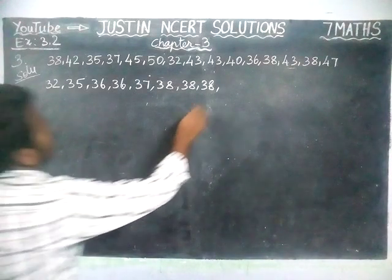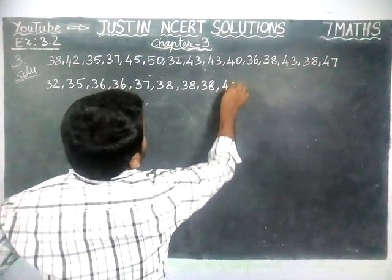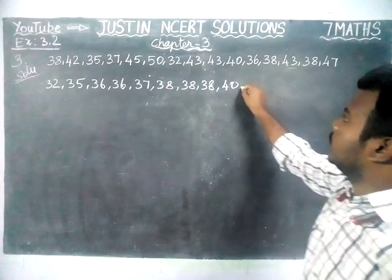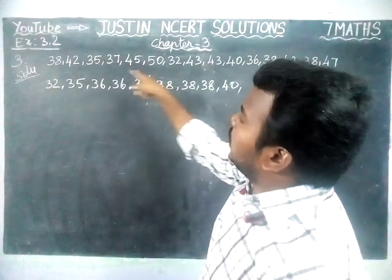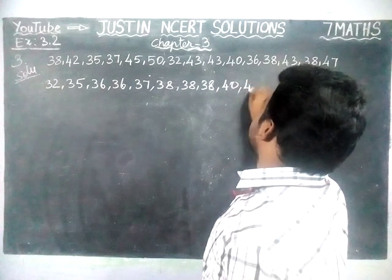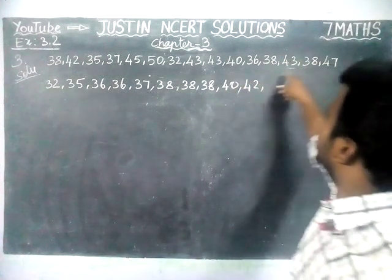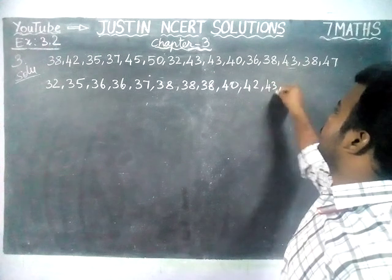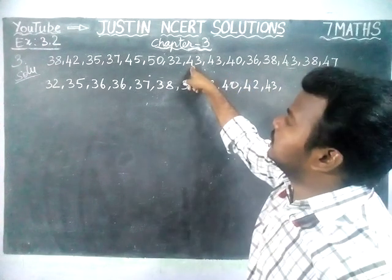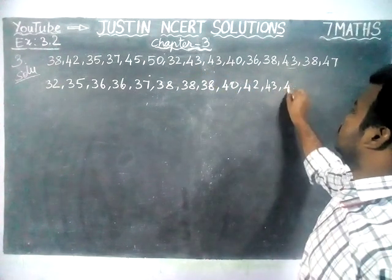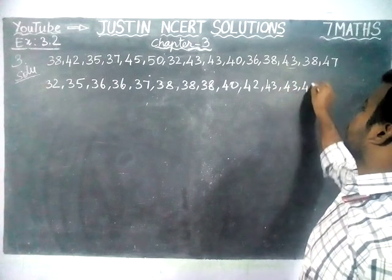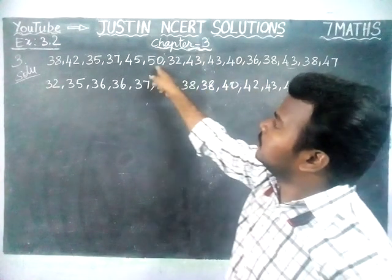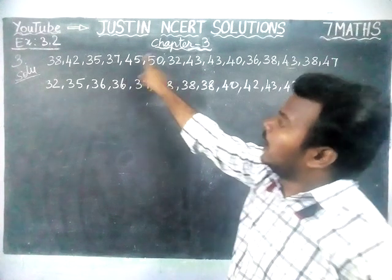Next number, 40 — 40 appears one time. And next number, 42 — 42 appears only one time. Next, 43 — 43 appears 1, 2, 3 times. Then, after 43, 45 and 50 are there.